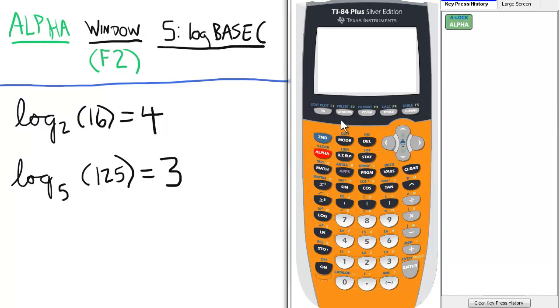We're going to press alpha, and then window, which is actually going to be the F2 selection. And then from this submenu, we're going to select 5, which is log base.